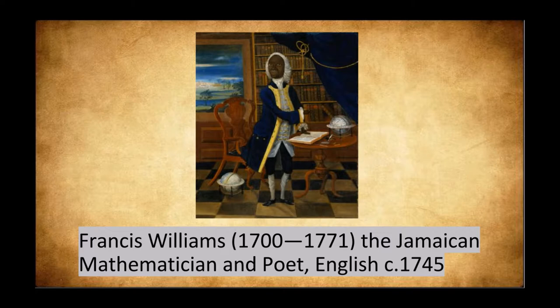This portrait was painted in 1745, so that means he was 45 years old in this picture. If you examine the picture, to the left you see a window, and that is portraying — or people believe it's portraying — Spanish Town, Jamaica. His surroundings show his wealth because he is from a wealthy family, and the books and the globes show that he is an educated man, which he was.